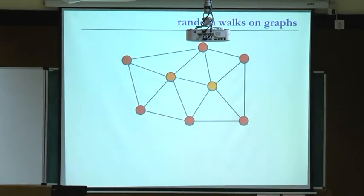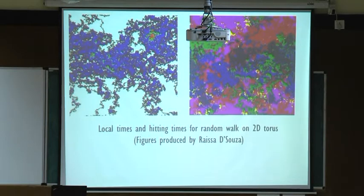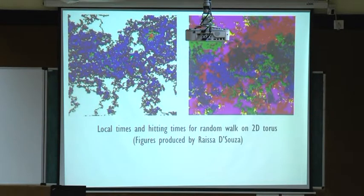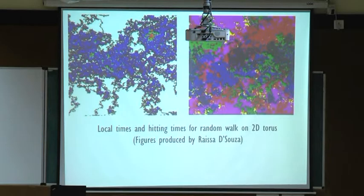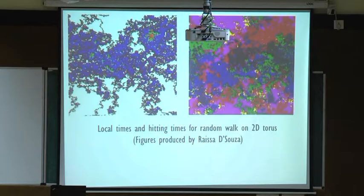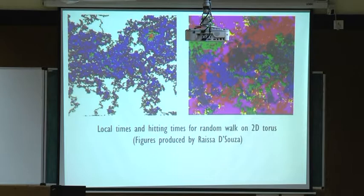We're going to look at the random walk on a graph and look at local times and hitting times. There are some nice pictures produced by Raisa D'Souza: local times for a random walk run on a large square, I think 500 by 500. We run the random walk for a long time and the colors record how many times we visited every site. In this picture we ran the random walk for longer with periodic boundary conditions — it's really on a torus — so when the walk exits one side it re-enters the other and will eventually cover the whole square.